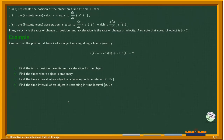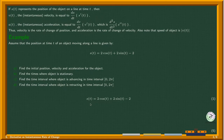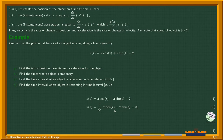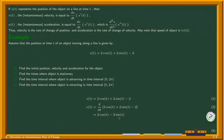Before moving into these parts, let's find the velocity and acceleration at time t. We know the position at time t is given by s(t). To find the velocity, we differentiate s(t) with respect to t. Using the sum rule and pulling out the constant 2, we differentiate the cos term to get negative sine, and the derivative of sine is cos. So velocity v(t) equals negative 2 sin t plus 2 cos t. The derivative of the constant 2 is 0.